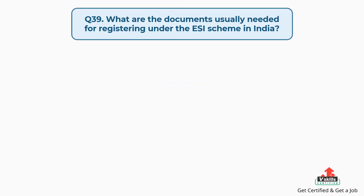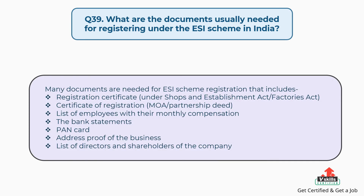Question number thirty-nine: What are the documents usually needed for registering under the ESI scheme in India? The answer is, many documents are needed for ESI scheme registration, including: registration certificate under Shops and Establishment Act or Factories Act; certificate of registration, MOA or partnership deed; and list of employees with their monthly compensation.